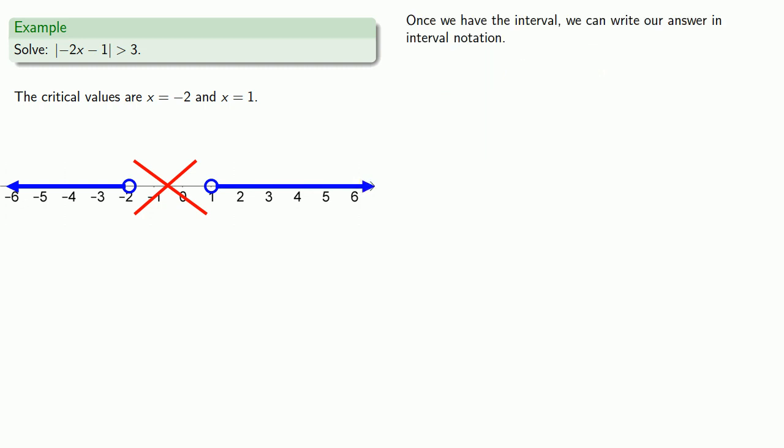Once we have the interval, we can write our answer in interval notation. This left interval goes from way, way left—we call that minus infinity—all the way up until we hit negative 2, and we don't include it. Remember, infinity is never included in our interval; it always gets a parenthesis. Negative 2, because it has an open circle, shouldn't be included either, so we'll close parenthesis there. This describes our left interval: minus infinity up to negative 2.